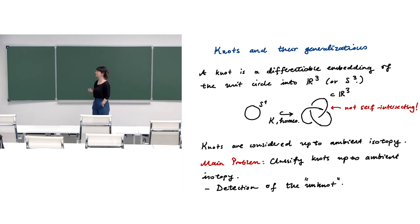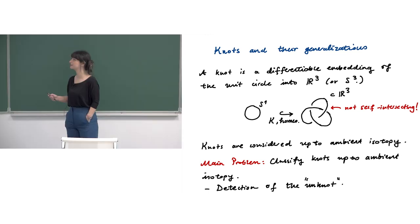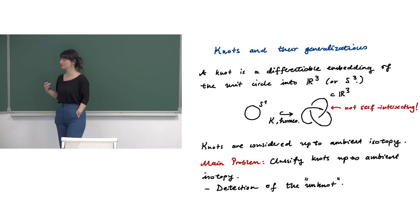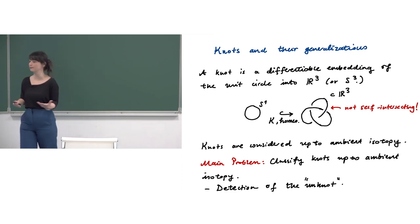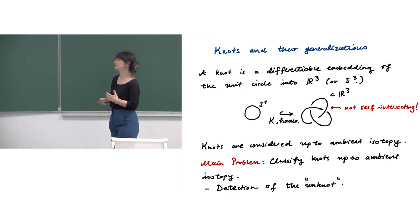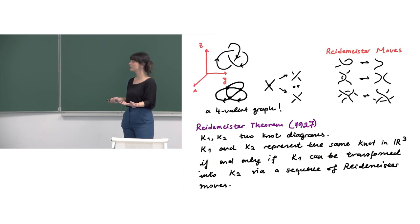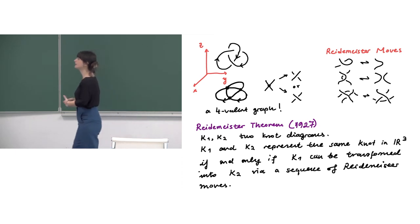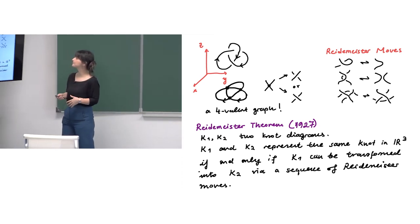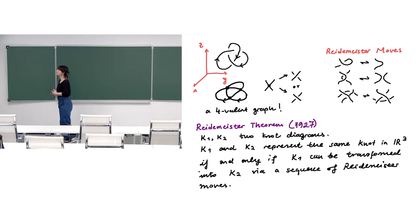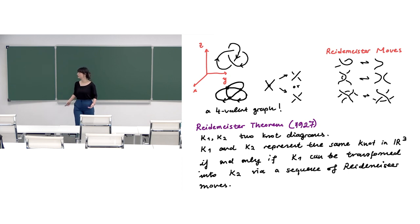We know what a knot is — a knot in three-dimensional Euclidean space. The main problem of knot theory is to classify knots up to ambient isotopy. I showed you that this ambient isotopy relation can be captured by three Reidemeister moves in the plane — Reidemeister one, two, and three — and by the Reidemeister theorem we can work knots through their diagrams in the plane.